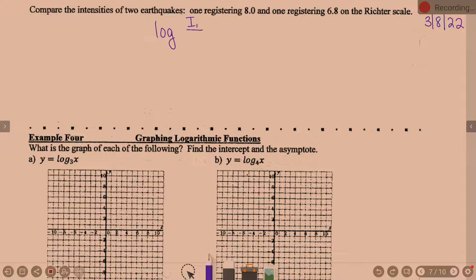The log of I1 divided by I2 is equal to M1 minus M2. You're asked here to compare the intensities of two earthquakes, one registering 8.0 and one registering 6.8. Those are the magnitudes. So the log of I1 over I2 is equal to 8.0 minus 6.8.